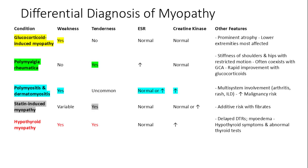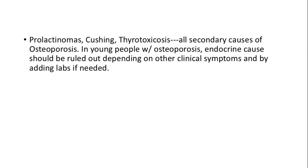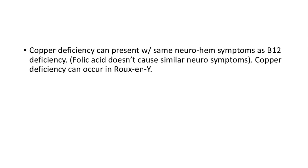Differential diagnosis of myopathy includes glucocorticoid-induced myopathy and dermatomyositis or polymyositis, which present mainly with weakness and muscle atrophy. Polymyalgia rheumatica presents with pain and stiffness. Statin-induced myopathy presents with pain and CK elevation. Hypothyroid myopathy has both pain and weakness. Prolactinomas, Cushing's syndrome, and thyrotoxicosis are all secondary causes of osteoporosis. In young patients with osteoporosis, it's important to rule out endocrine causes. Copper deficiency can present with similar neurohematological symptoms as B12 deficiency and is particularly noted in patients who have undergone Roux-en-Y gastric bypass surgery.